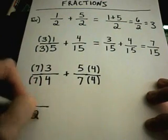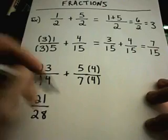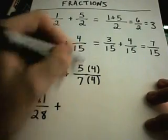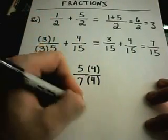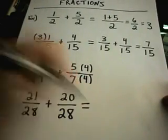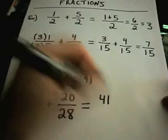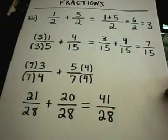In this case, you'll get 28 on the left side. 7 times 3 is 21. On the right side, you'll have 5 times 4, which is 20. 7 times 4 is 28. And again, if you add 21 plus 20, you'll get 41 over 28.